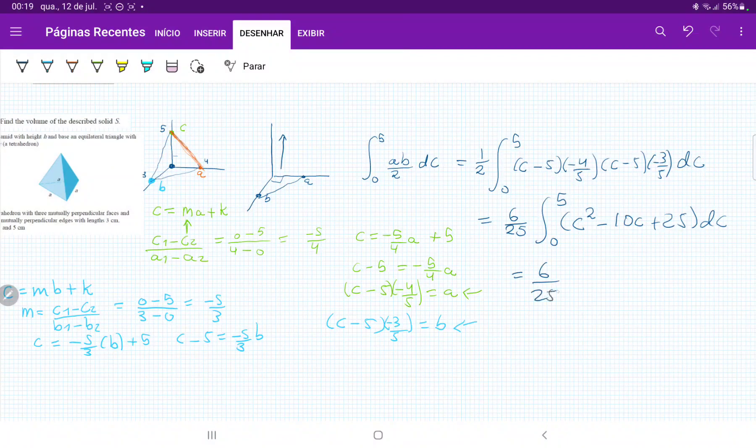So once we have cleaned this up, we're ready to integrate. So this is 6 25ths times C cubed over 3 minus 5C squared, and then plus 25C, and all of this evaluated from 0 to 5.